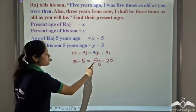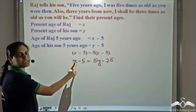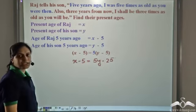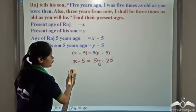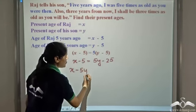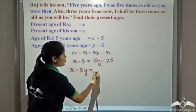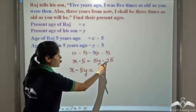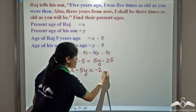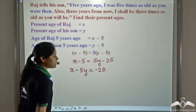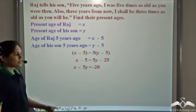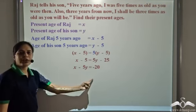We transpose five to the left side and negative five to the right hand side. So we get x minus five y is equal to negative twenty-five plus five, which is negative twenty. So this is our first equation.